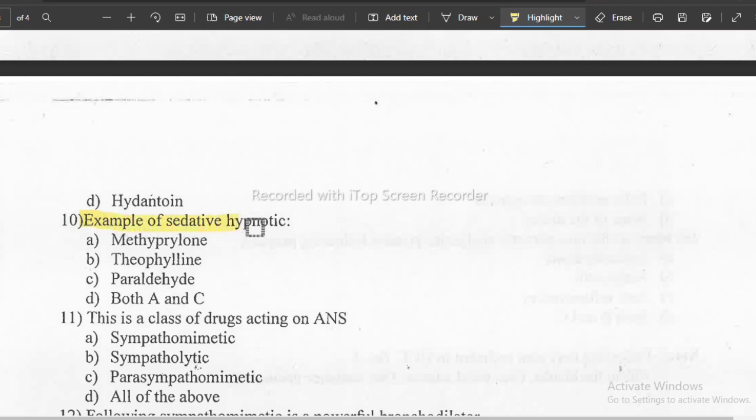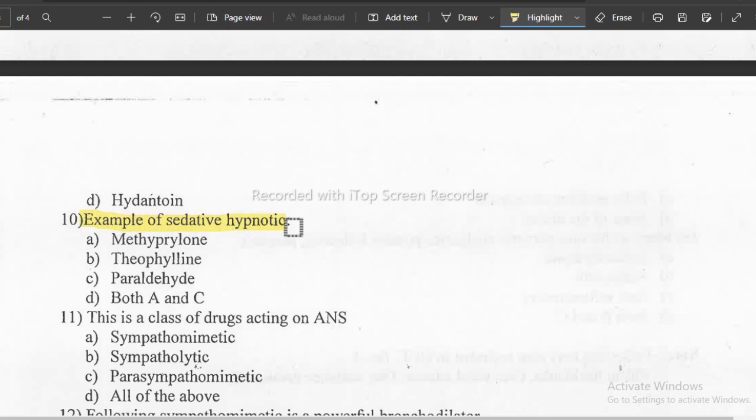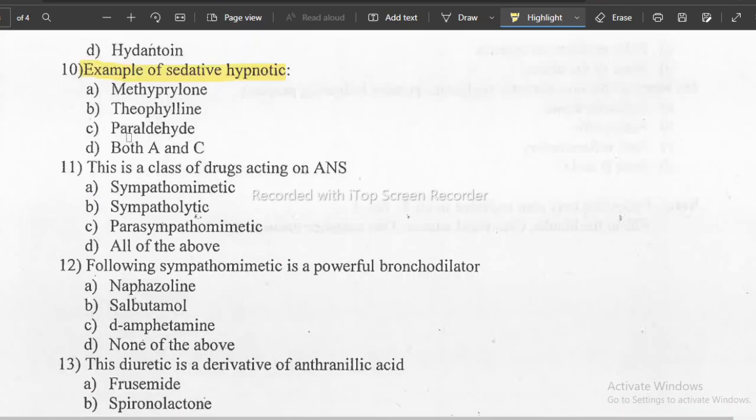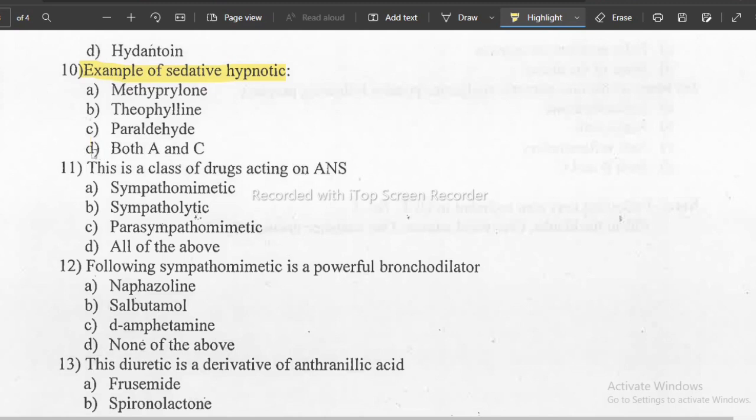Next question: example of sedative hypnotics. You should remember the classification of sedative and hypnotics. If you remember the classification, then only you can give the correct answer. So the correct answer is D, that is both A and C, that is methyl pralone and paraldehyde. This is the correct answer of sedative and hypnotic.